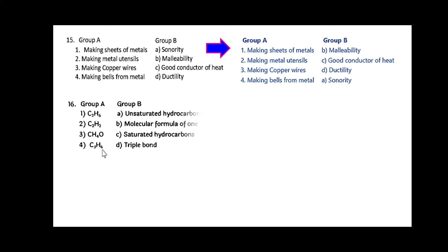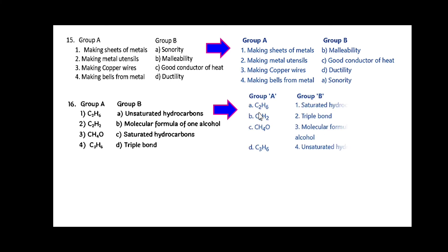Group A gives carbon compounds: C2H6, C2H2, CH4O, and C3H6. The types are to be matched. The answers are: C2H6 — saturated hydrocarbon; C2H2 — has a triple bond; CH4O — molecular formula of an alcohol; and C3H6 — unsaturated hydrocarbon.